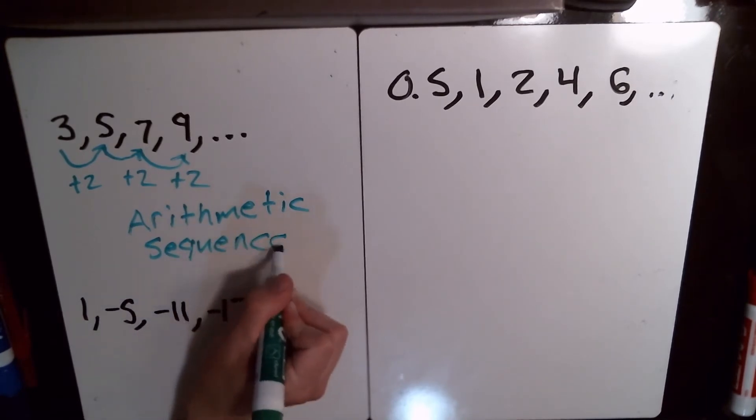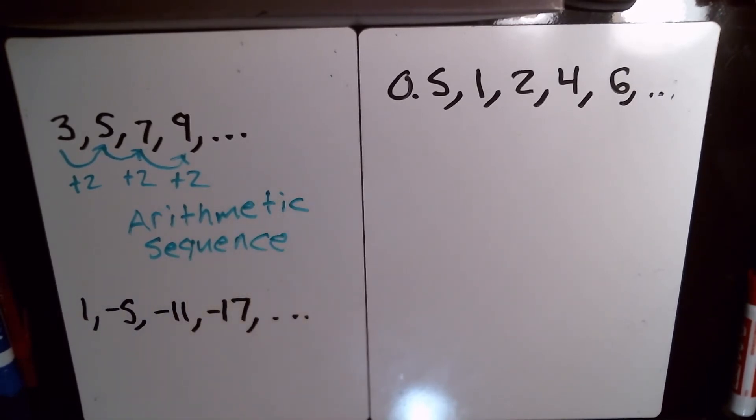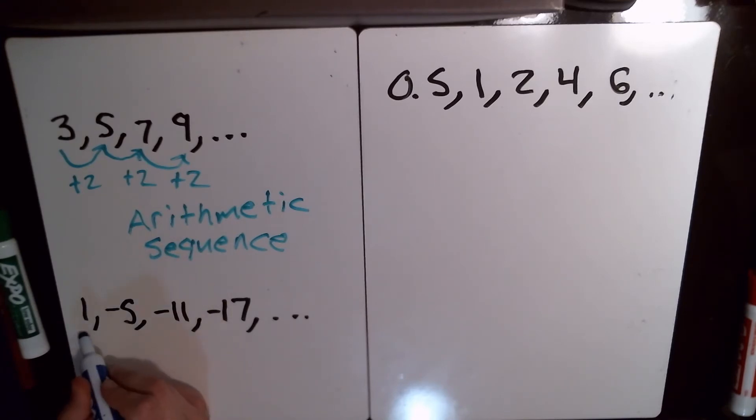Okay, so whenever you have it going up by the same amount every time, it's arithmetic. Let's look at the second one. To go from 1 to negative 5, what do we need to do? Well, we're starting at positive 1 and we need to end up at negative 5, so we need to go down 6.